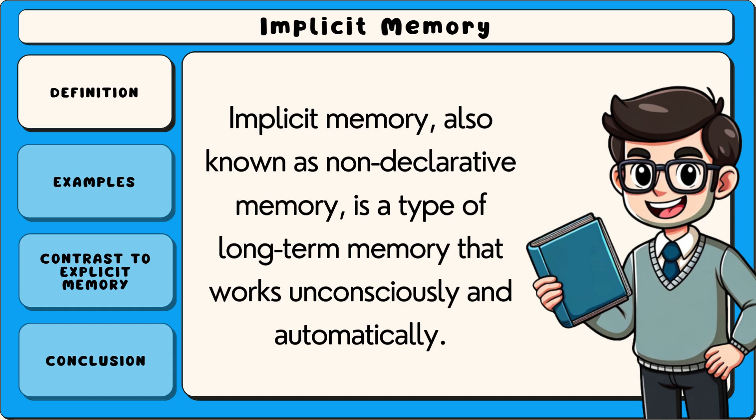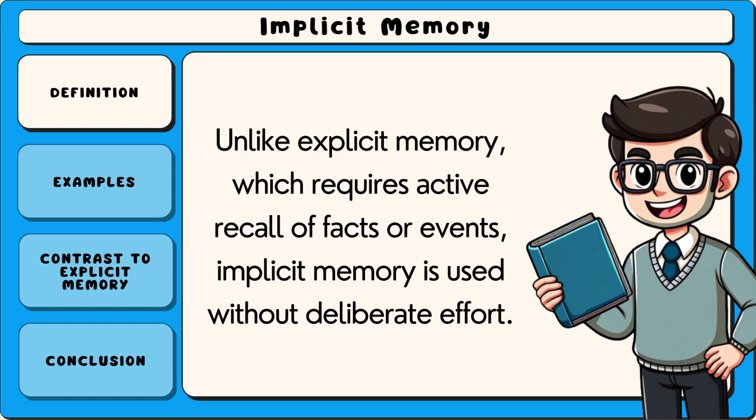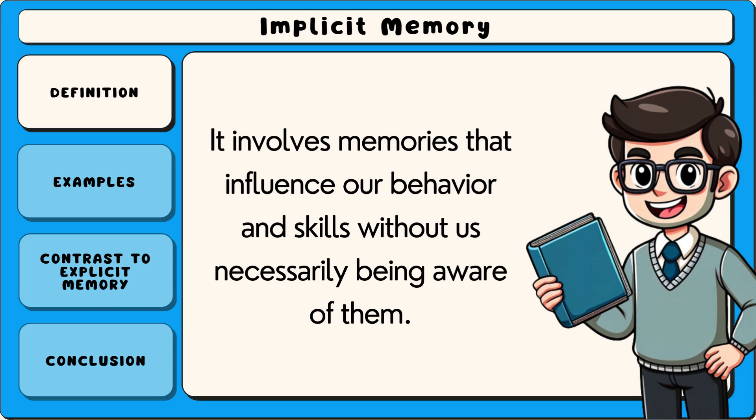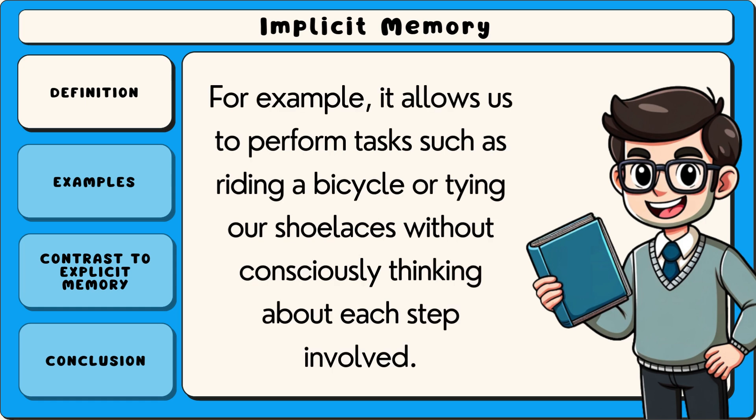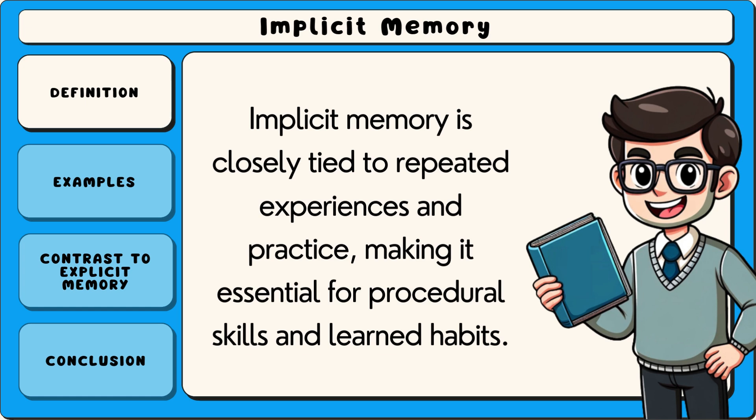Implicit memory, also known as non-declarative memory, is a type of long-term memory that works unconsciously and automatically. Unlike explicit memory, which requires active recall of facts or events, implicit memory is used without deliberate effort. It involves memories that influence our behavior and skills without us necessarily being aware of them, allowing us to perform tasks such as riding a bicycle or tying our shoelaces without consciously thinking about each step involved. Implicit memory is closely tied to repeated experiences and practice, making it essential for procedural skills and learned habits.